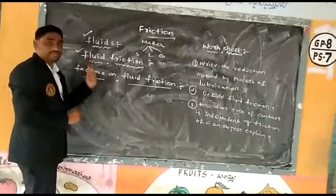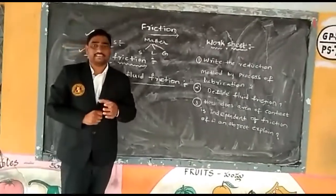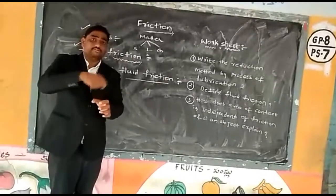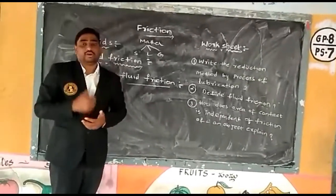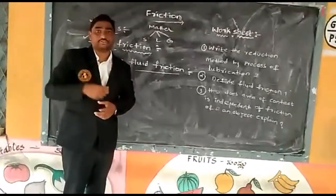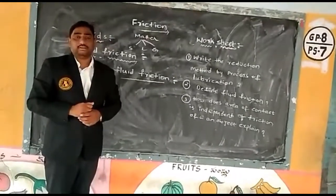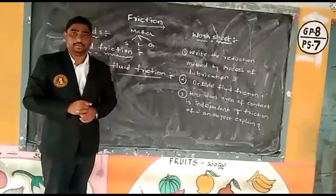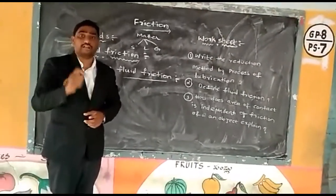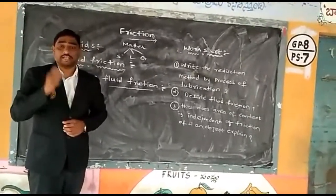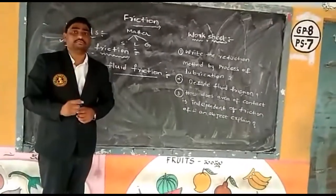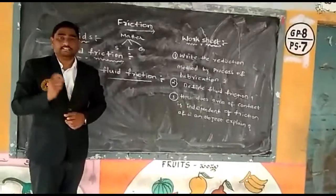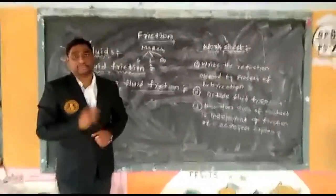Dear friends, let me explain fluid friction with an example. Take a glass of water and use a stirrer to swirl the water. When we rotate the stirrer, the water comes into a whirling motion. That whirling motion of the water is going to be continuous until we stop the rotation of the stirrer. Once we stop the rotation of the spoon, the whirling motion of the water gradually decreases and after a certain amount of time it disappears.